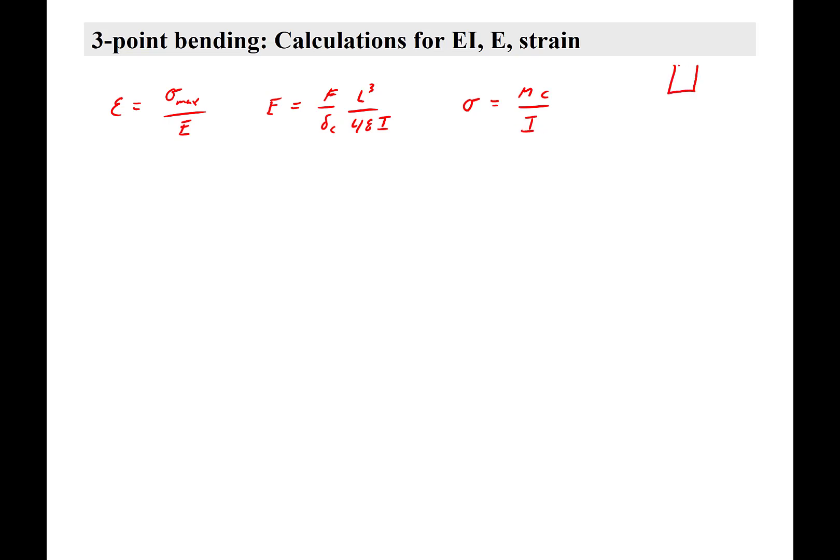Where, for a cross-section, C is the maximum distance from the neutral axis to the edge. And in this case, C is H over 2, the full thickness is H.